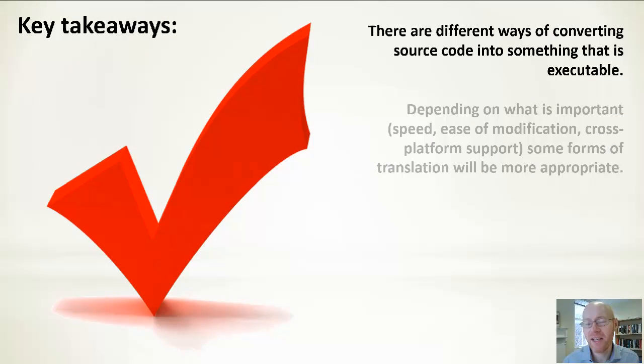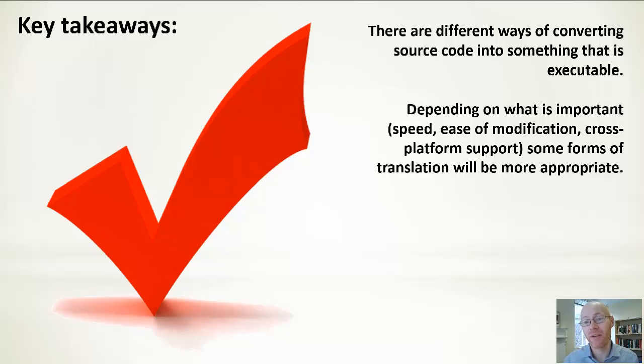Key takeaways: there are different ways of converting source code into something that's executable, and what is the right technique or best technique does depend on what you want to get out of it. If you want something that is flexible where performance isn't that important and you want to be able to modify it, you're more towards the pure interpreted side. If you want something that is cross-platform and reasonably fast, then you're looking at Java and other managed languages. If performance is really of utmost importance, then you're looking at having a good compiler with a lot of optimizations that'll be targeted for a specific platform.